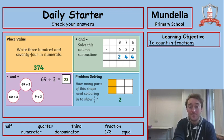Solve this column subtraction. 876 subtract 632. So 6 take away 2 is 4. 7 take away 3 is 4. 8 take away 6 is 2. So 244 is our answer there.